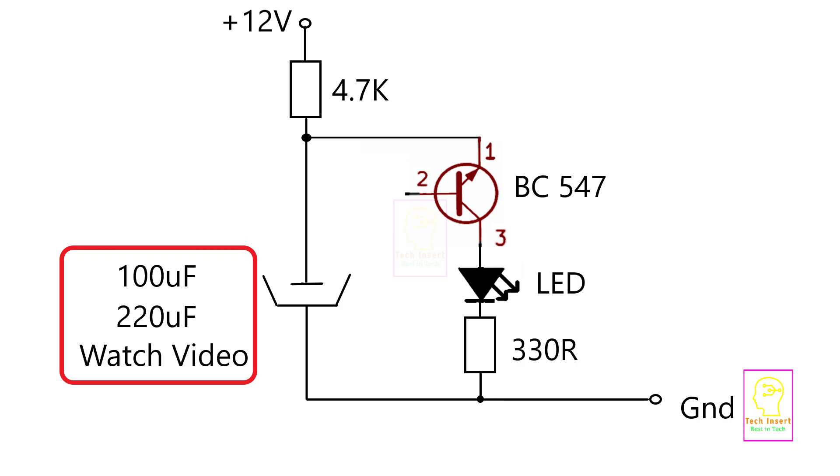Here the capacitor and the resistor is controlling the transistor operation indirectly. When the power is switched on the LED will be in the off state. This is because the base emitter junction does not have any current flow. Meanwhile the capacitor starts charging through 4.7k resistor.